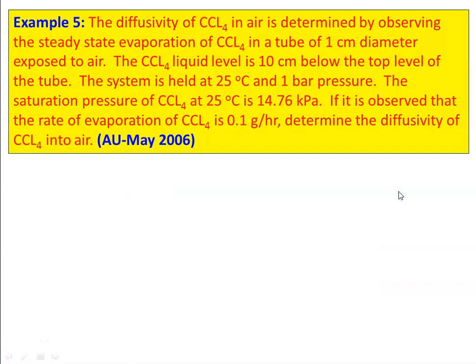Example number 5: The diffusivity of carbon tetrachloride CCl4 in air is determined by observing the steady state evaporation of CCl4 in a tube of 1 centimeter diameter exposed to the air. The CCl4 liquid level is 10 centimeter below the top level of the tube. The system is held at 25 degree Celsius and 1 bar pressure. The saturation pressure of CCl4 at 25 degree Celsius is 14.76 kilopascal. The rate of evaporation of CCl4 is 0.1 grams per hour. Determine the diffusivity of CCl4 in air.